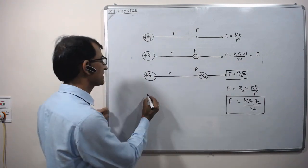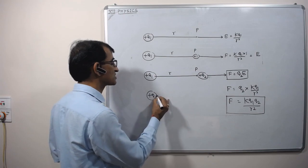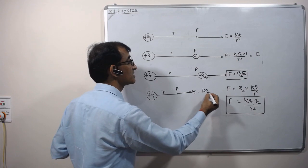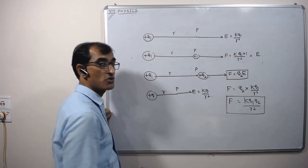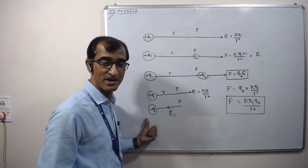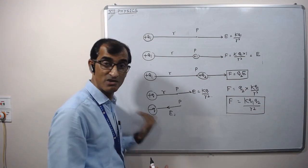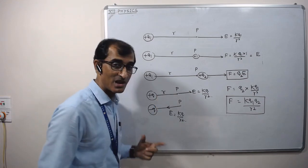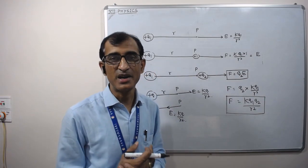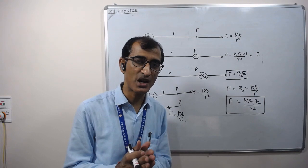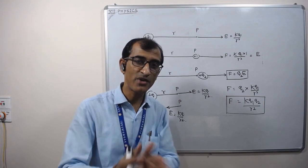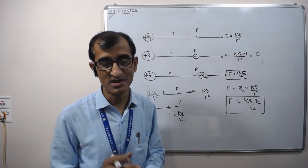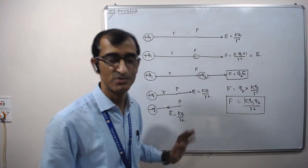Due to charge plus q at a distance r, intensity will be in the outward direction and is given by kq upon r². If the source charge is negative, then the intensity at the same point will be inward, also kq upon r². In brief, the intensity of electric field due to a positive source charge will be away from the charge, and due to a negative charge, it will be towards the charge. It is the simplest concept.